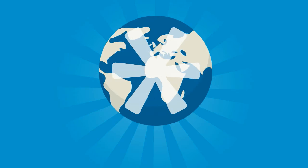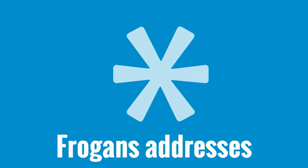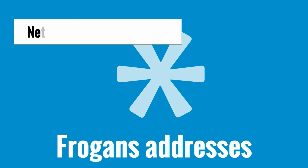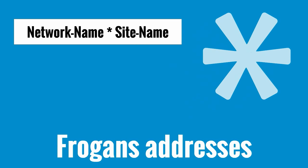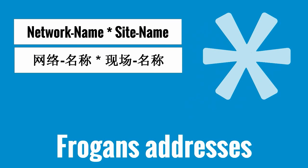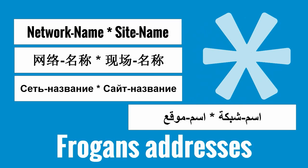The Fogans technology introduces a new type of address. Fogans addresses are based on a short and simple pattern: network name, star, site name. Fogans addresses aren't limited to Latin characters — they can be in 179 languages, and they can even be written from right to left. Fogans addresses are easily recognisable, thanks to the star.